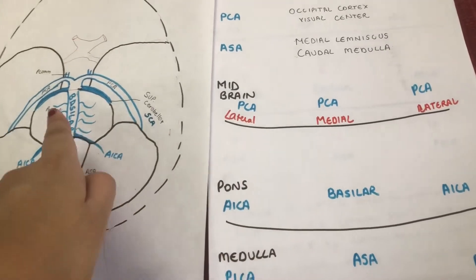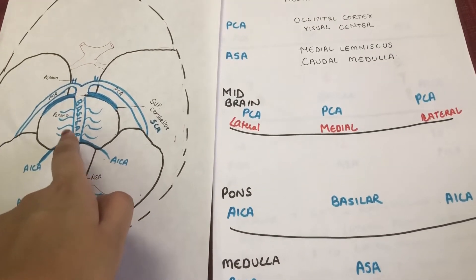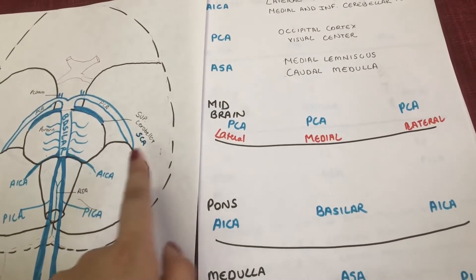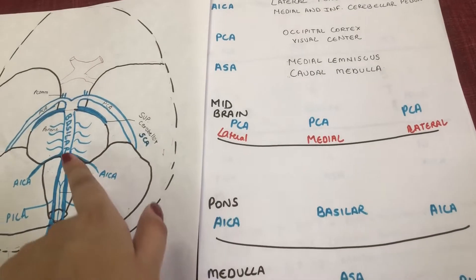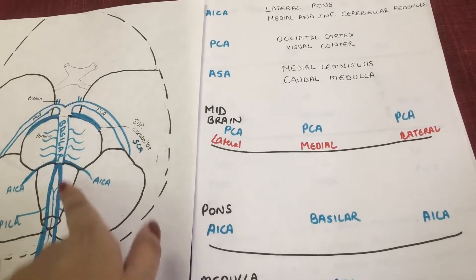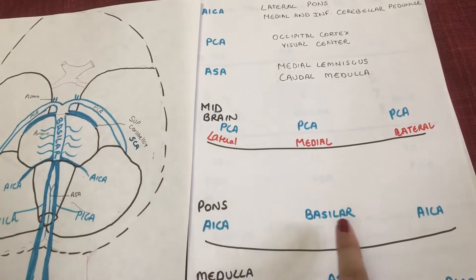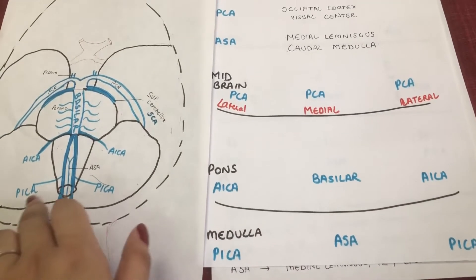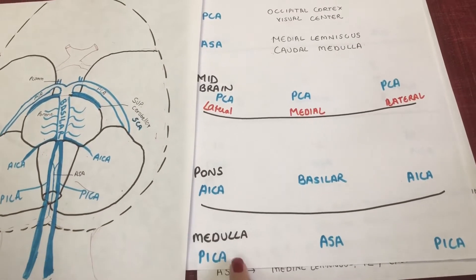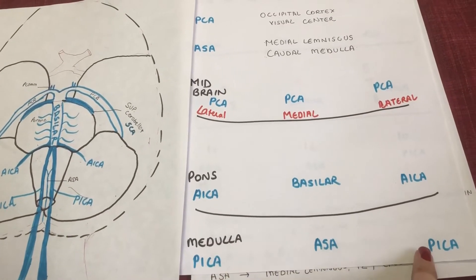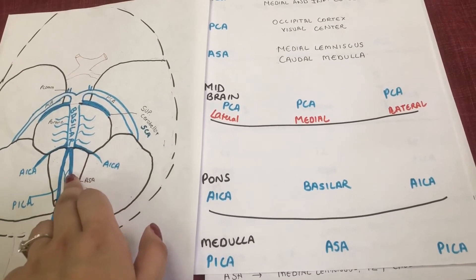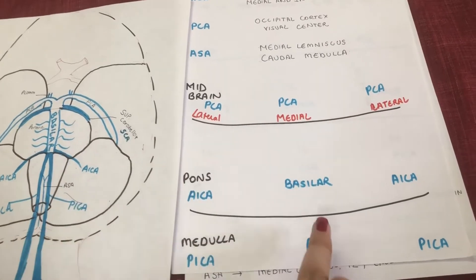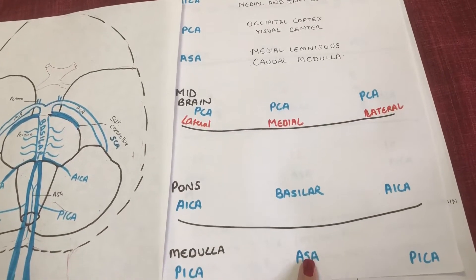For the pons, you have ACA coming out from the lateral sides, and medially you have only the basilar artery. For the medulla, you have PICA on the lateral sides, and in the middle you have the ASA, the anterior spinal artery, coming right here.